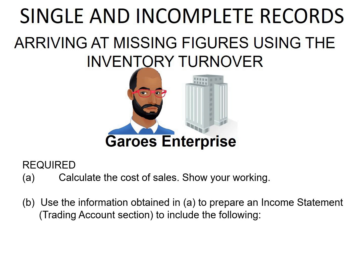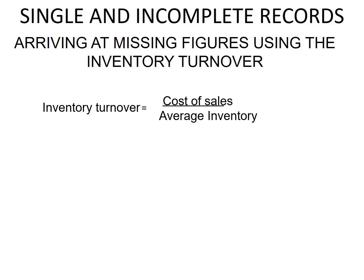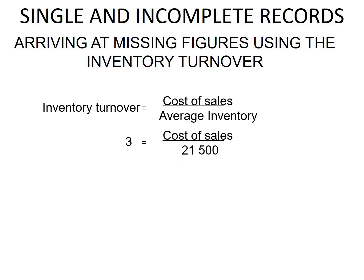What's required is to calculate the cost of sales, showing our working, and then use the cost of sales obtained to prepare the income statement — specifically the trading account section — including sales, purchases, and gross profit. The formula for inventory turnover is cost of sales divided by average inventory. We already have the inventory turnover, which is three, and the average inventory is calculated as opening inventory plus closing inventory divided by two.